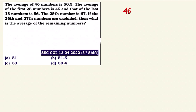46 numbers, average is 50.5. The average of the first 25 numbers is 45 — that is minus 5.5 from the overall average, so 25 into minus 5.5. The last 18 numbers average is 56, so 18 numbers is 56, which is plus 5.5.